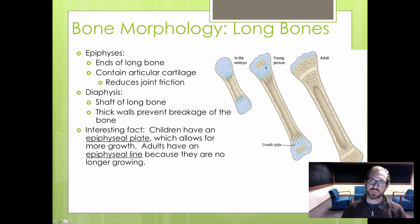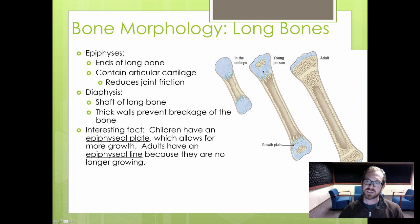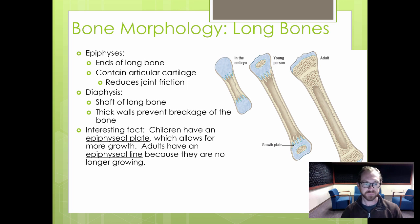At the epiphyses, you've likely heard of the growth plate — an area that allows the bone to grow when you're young, called the epiphyseal plate. As the bone grows and hyaline cartilage creates more bone, we form the epiphyseal line, which used to be your growth plate. In adults, we have this clearly visible epiphyseal line at the ends of our long bones.